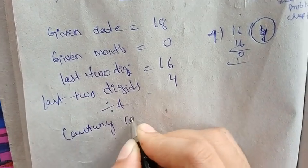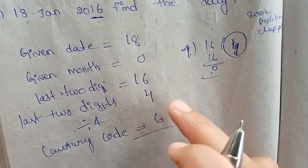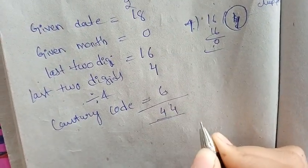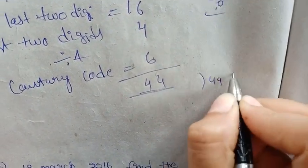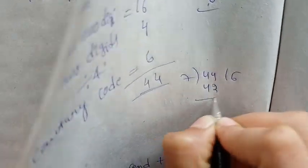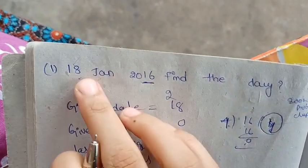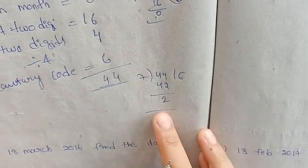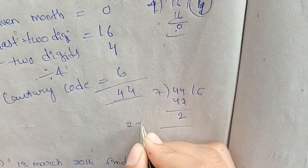Adding the values: 18 + 0 + 16 + 4 + 6 = 44. Now divide 44 by 7: 6×7=42, remainder is 2. Remainder 2 means Tuesday. But wait — because this is a leap year and the date is in January, we need to apply the leap year adjustment.